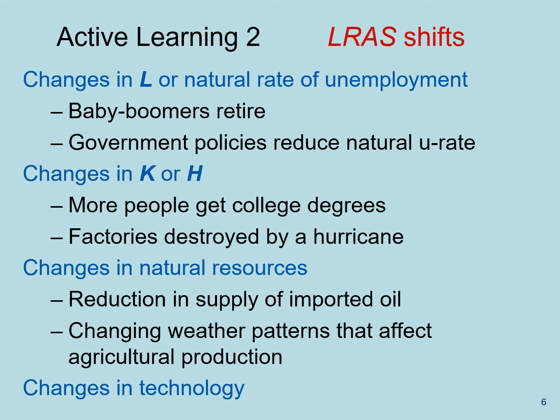Things that could change the long run aggregate supply: baby boomers retiring, government policies that reduce the natural unemployment rate. All of those are changes in the amount of labor available in the economy.